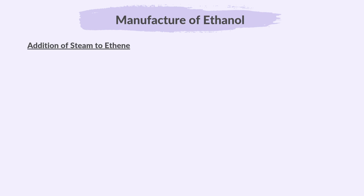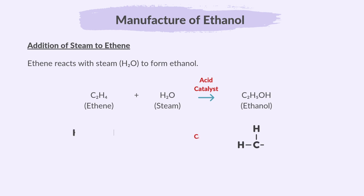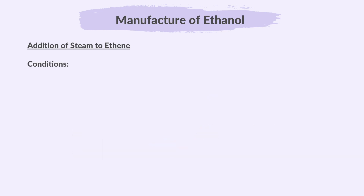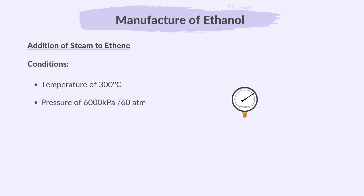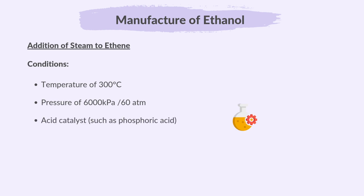The other way to make ethanol is by the addition of steam to ethene. Remember, ethene reacts with steam to form ethanol. The conditions required are: a temperature of 300 degrees Celsius, a pressure of 6000 kilopascals or 60 atmospheres, and an acid catalyst such as phosphoric acid.